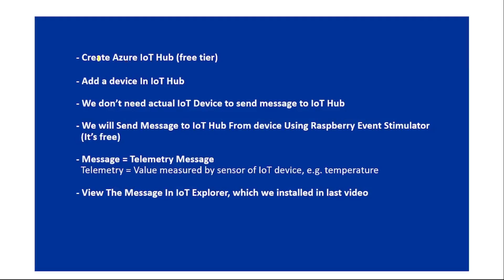In this video, let's create an Azure IoT Hub, then add a device to it. We don't need an actual IoT device to send messages — we'll use a Raspberry Pi IoT Simulator, which is free. The messages we'll send are telemetry messages, meaning values measured by a sensor of an IoT device, for example temperature.